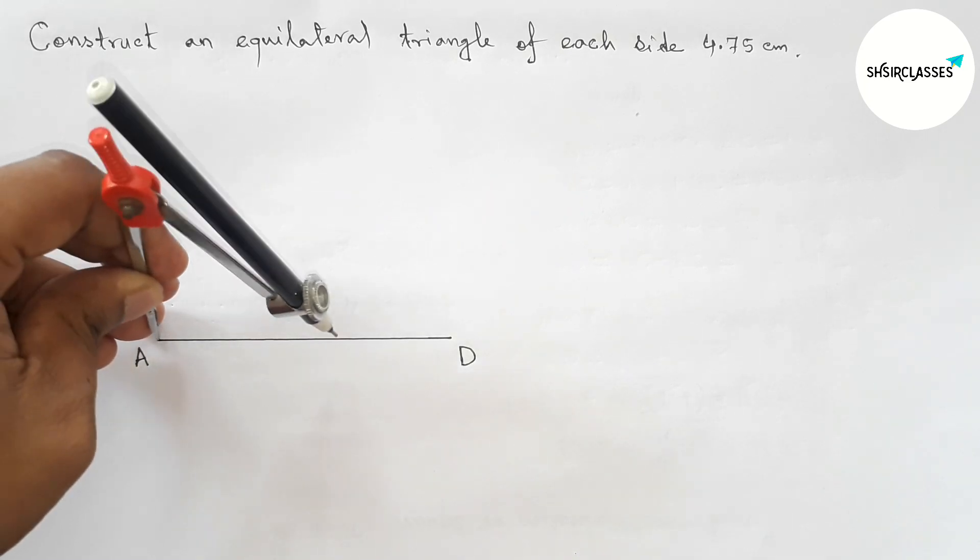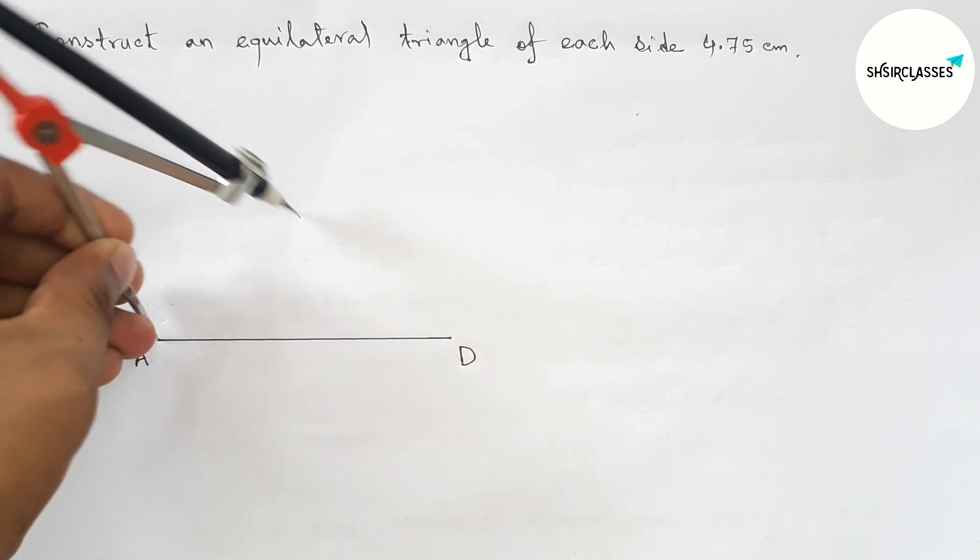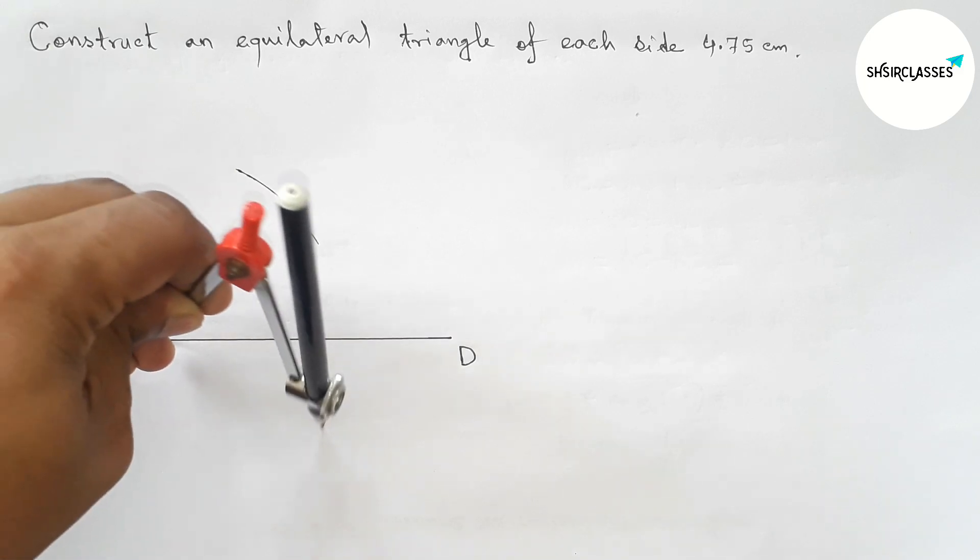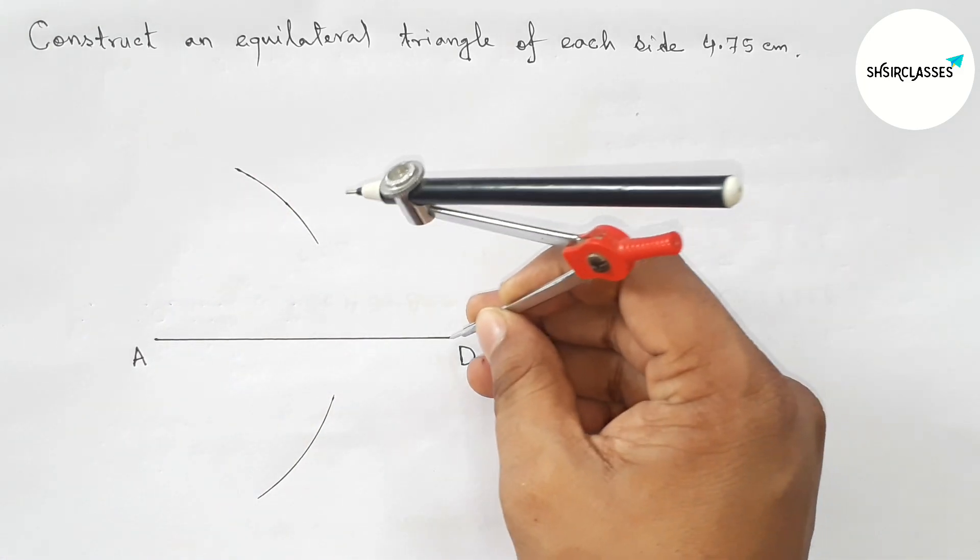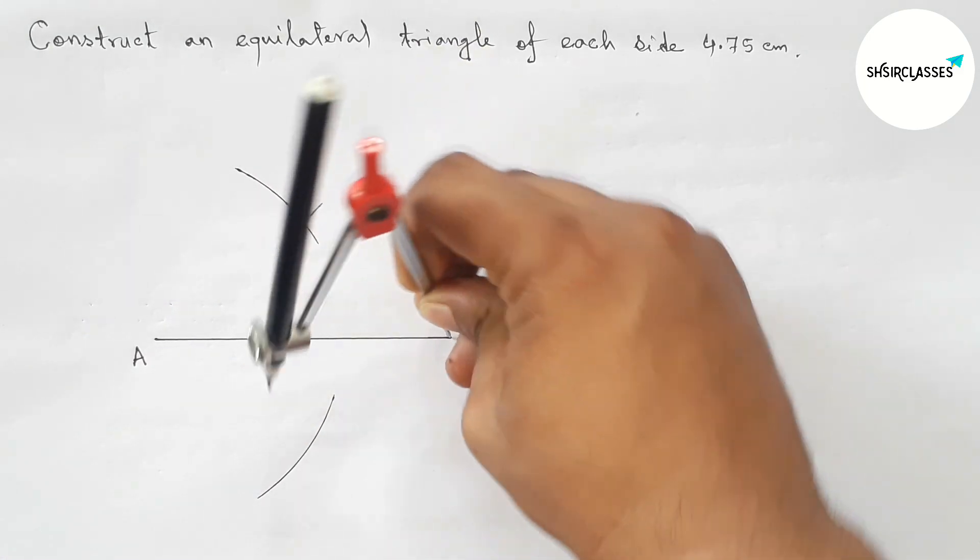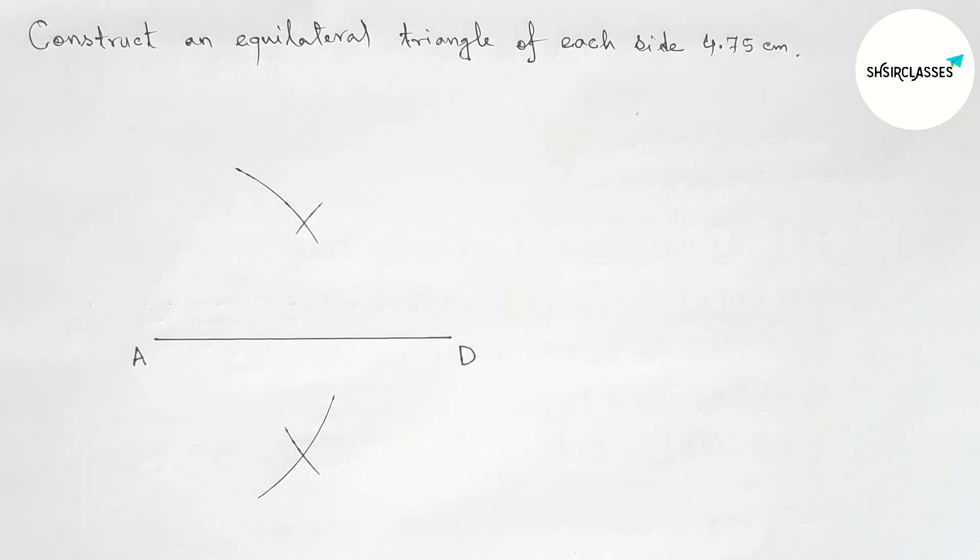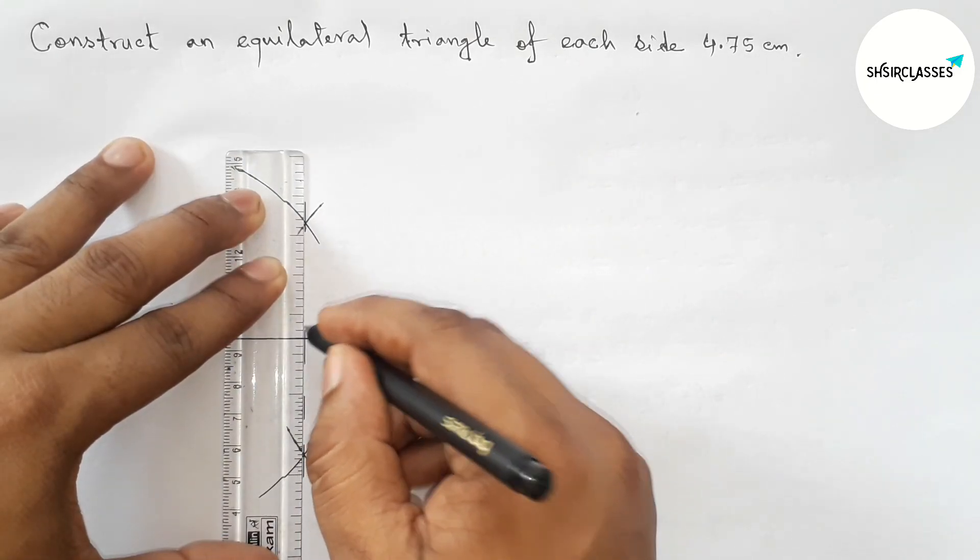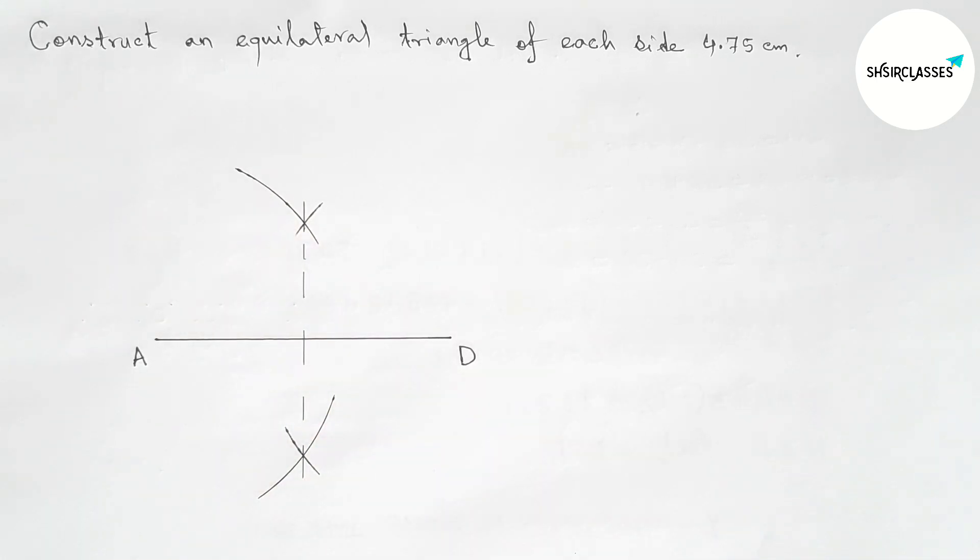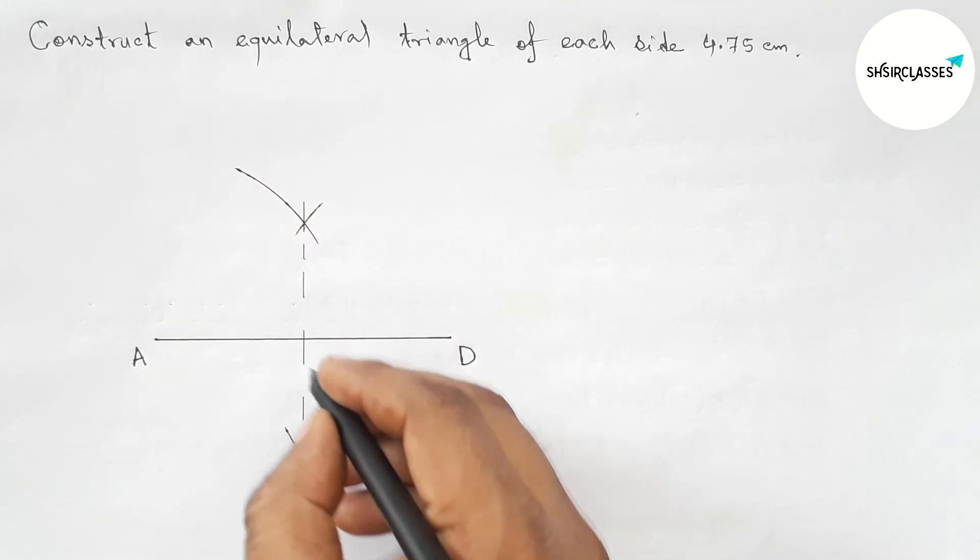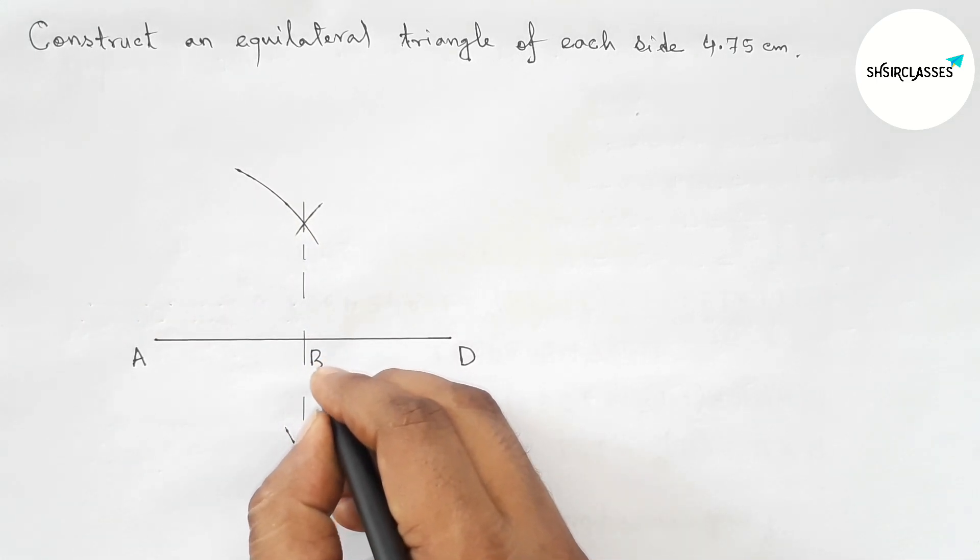Putting the compass on point A and taking greater than half of AD and drawing an arc here, and drawing an arc here. Again with same length, putting the compass on point D and cut here, and cut here. Okay, now joining this which bisects the line AD here at a point.